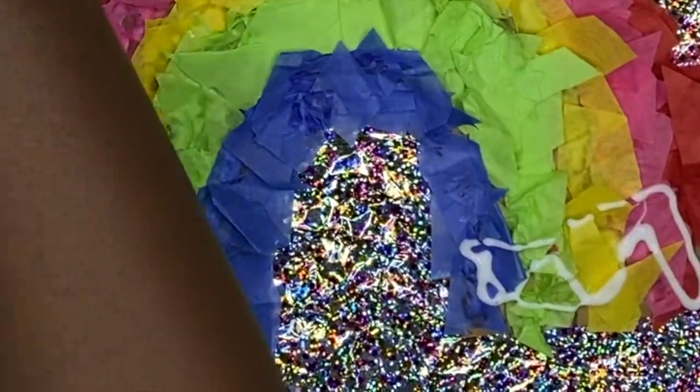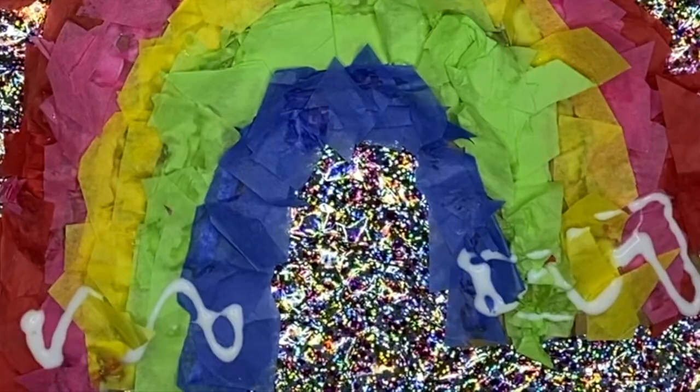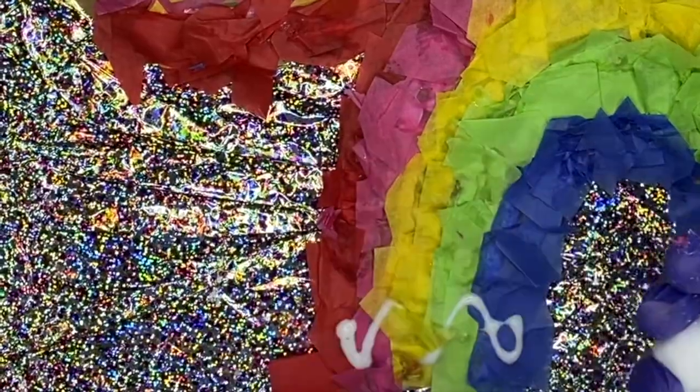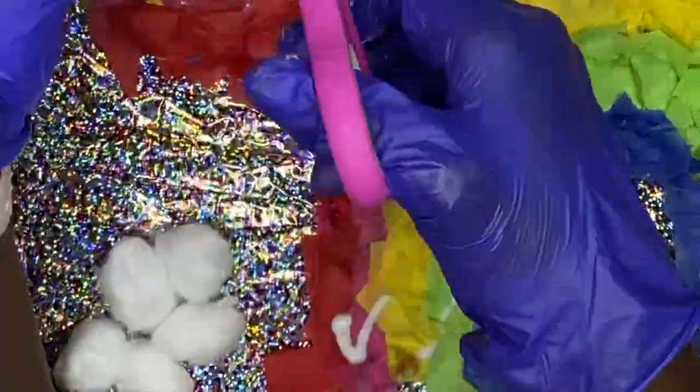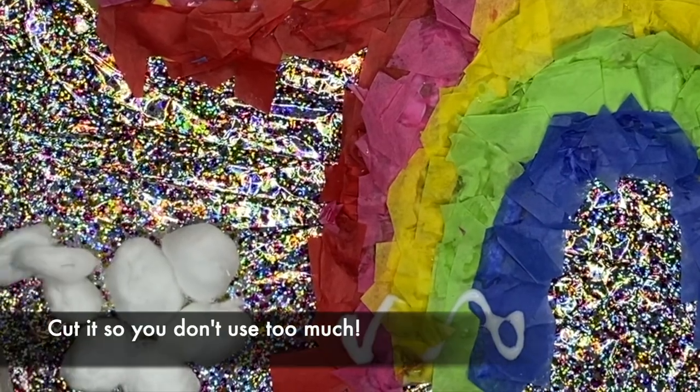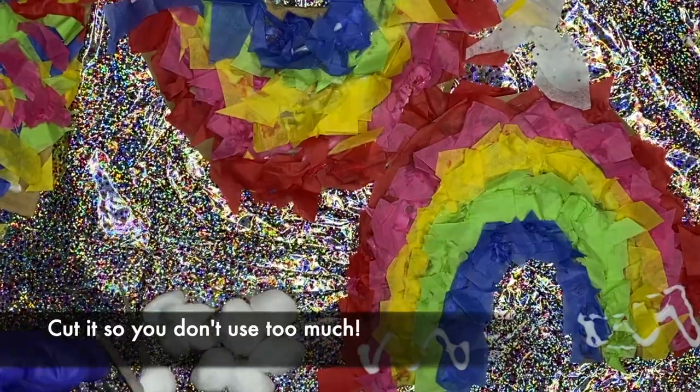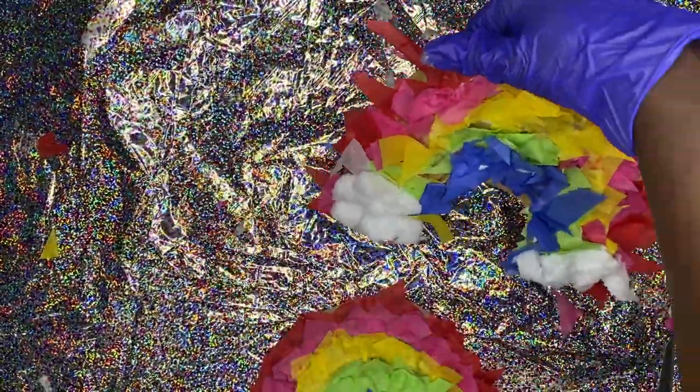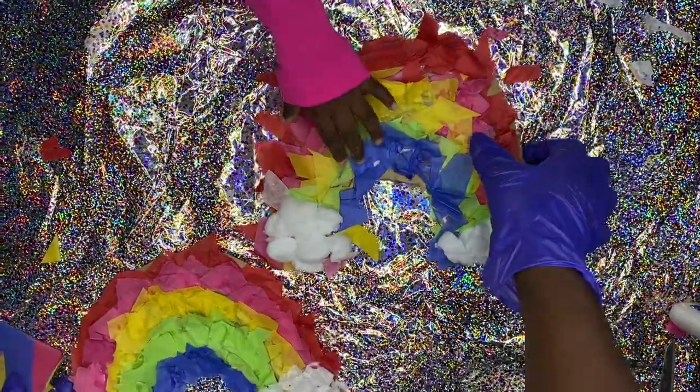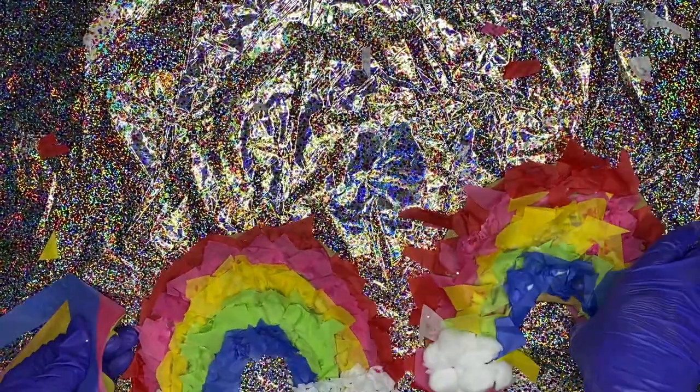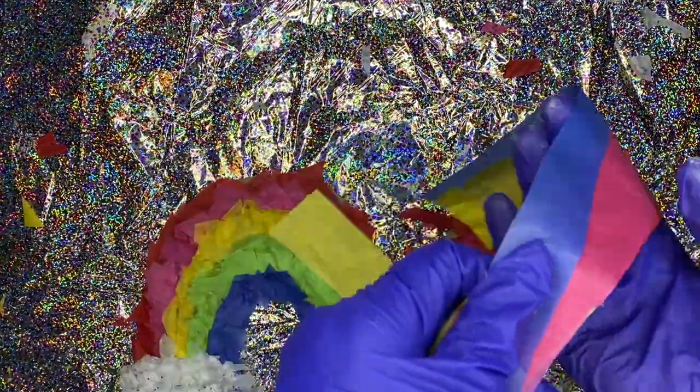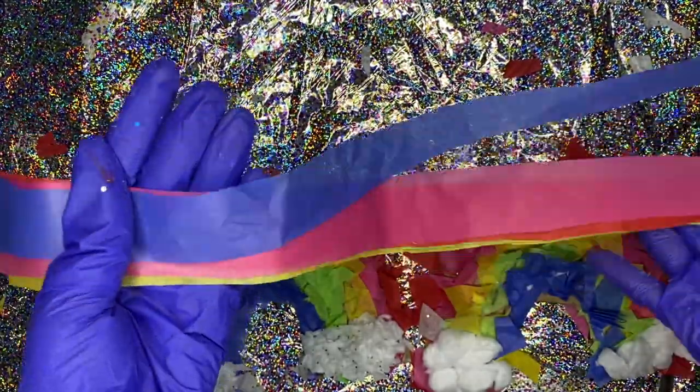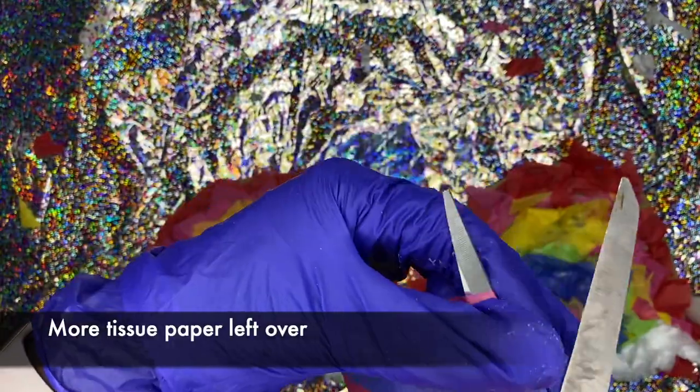All right, so back to the craft that we were doing. Now you're going to add the clouds. So like I said, you can use cotton balls. My daughter said she wanted to use the cotton balls, so I'm going to let her use that, and I'm going to use the white tissue paper. So you guys just see how we do this and you decide which way you want to complete this craft. All right, so you see how I did mine with the tissue paper and my daughter did hers with the cotton ball. So you choose which way you want to do this. None is easier than the other—they're both extremely easy.